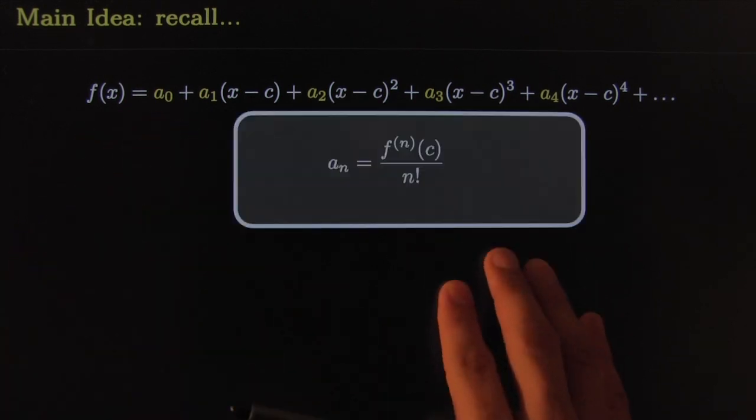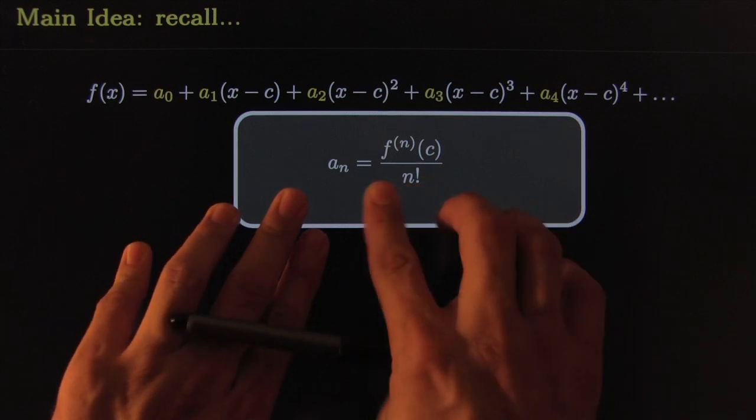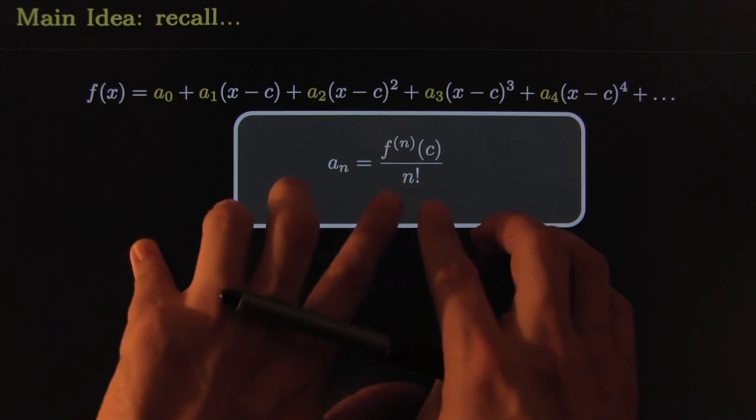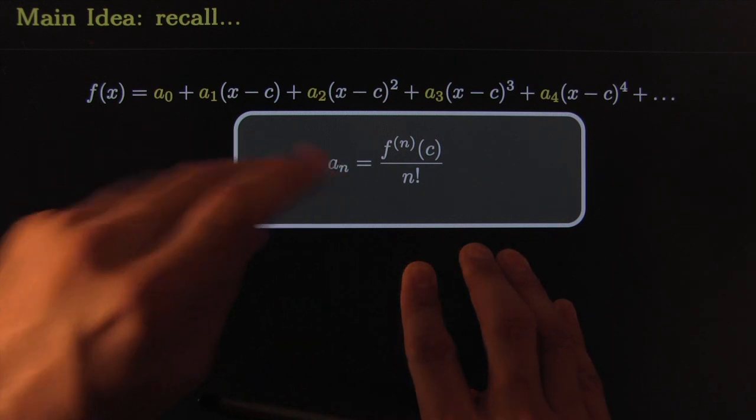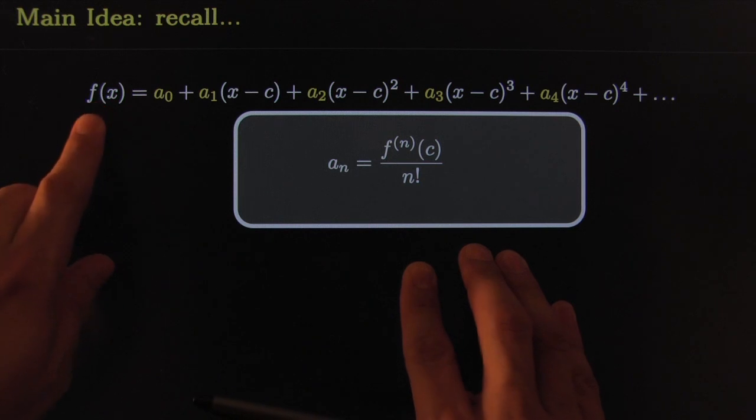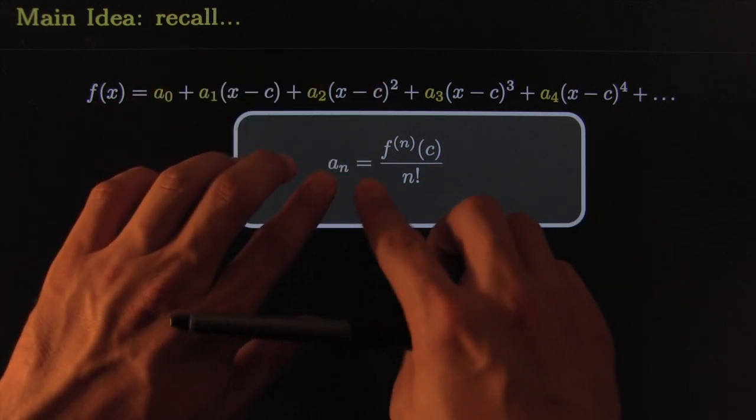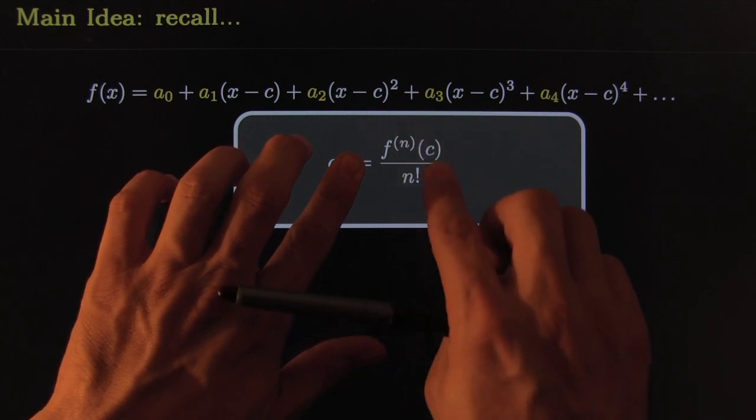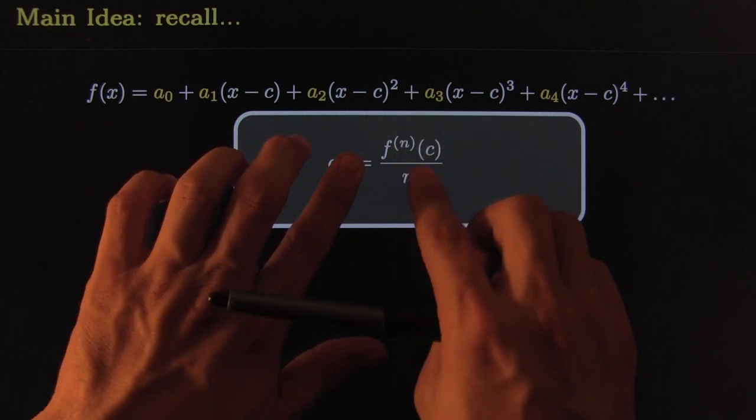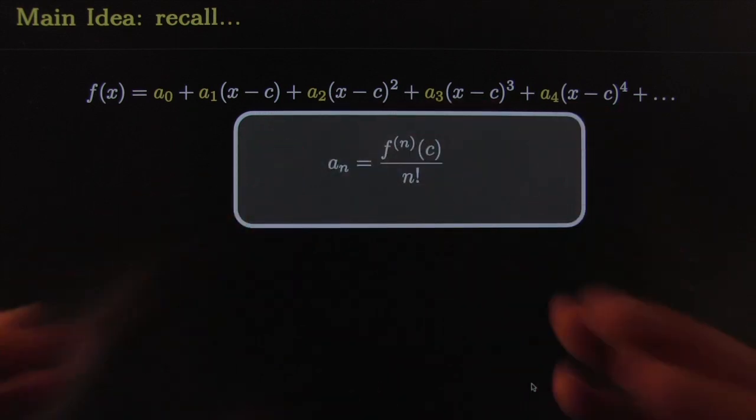In any case, we came up with this amazing formula here—the amazing formula that describes all of the coefficients. It is a formula that describes the entire DNA for the function. Look how amazing this is: you can recover the entire DNA just from looking at the values of its derivative at one single point at C. Just check all of its derivatives and you will get all of the coefficients.